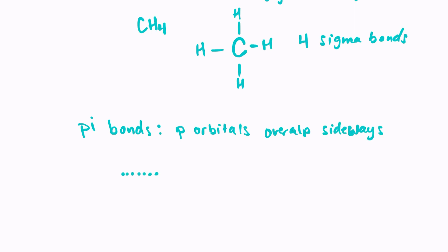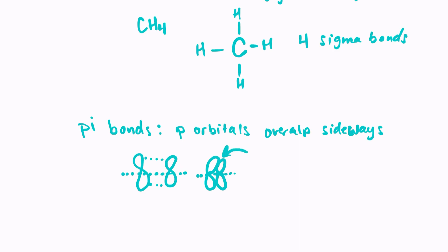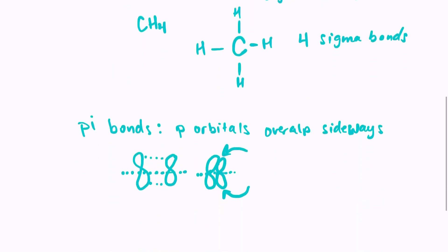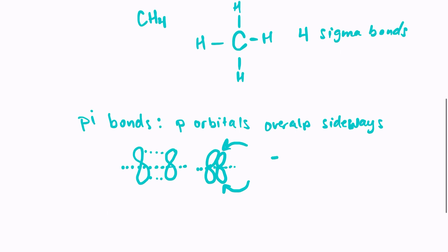If we had our bonding axis here, instead of overlapping lengthwise — where the tail of one p orbital hits the tail of another — they overlap sideways, forming a pi bond between the two p orbitals. With the nucleus somewhere in the middle, the electron density is actually above and below the nucleus, on either side of those p orbitals. Remember, with sigma bonds the electron density is right between the two nuclei, but with pi bonds the electron density has shifted away. This makes pi bonds weaker than sigma bonds.